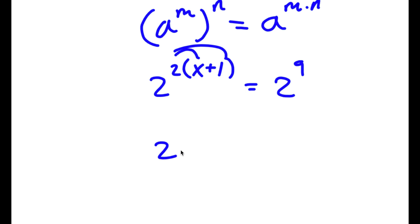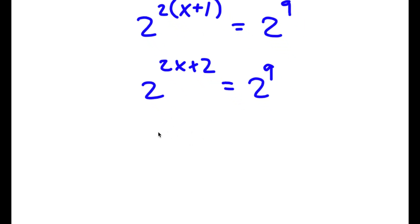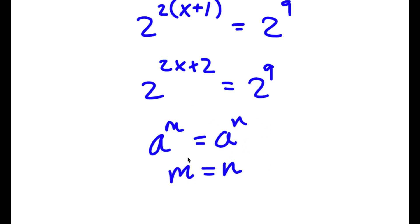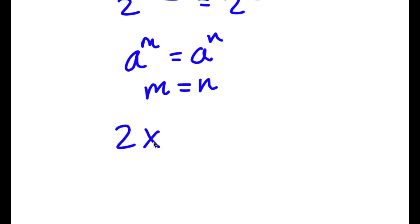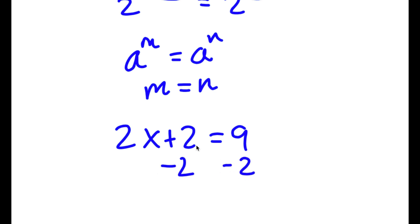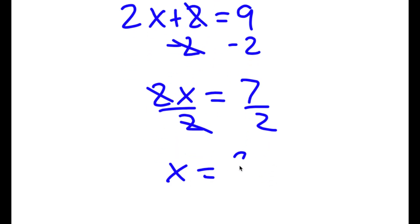Now if I distribute the 2, I get 2 to the power of 2x plus 2 is equal to 2 to the power of 9. Since the bases are equal, m equals n, so 2x plus 2 equals 9. Subtracting 2 from both sides gives 2x equals 7, and dividing both sides by 2 gives x equals 7 over 2.